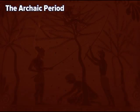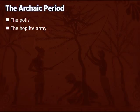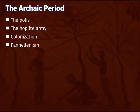There are key components to the Archaic Period: the emergence of the polis, the emergence of the hoplite army, the prevalence of colonization, and the idea of Panhellenism. All four of these things define the Archaic Period.